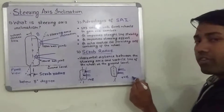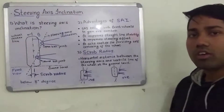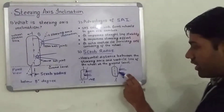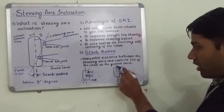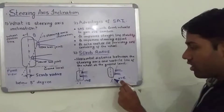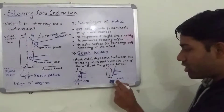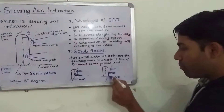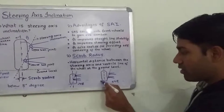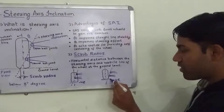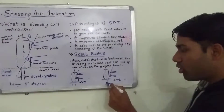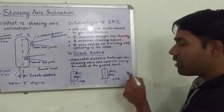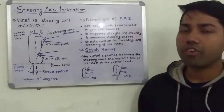Now, positive scrub radius: when the steering axis and the wheel center line intersect below the road surface — this is the road surface and these two lines intersect below it — it is called a positive scrub radius.